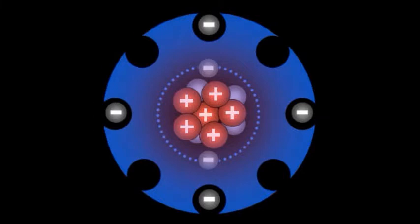The atomic number of carbon is six. Every carbon atom has six protons. Therefore, the neutron numbers in these isotopes are six, seven, and eight.